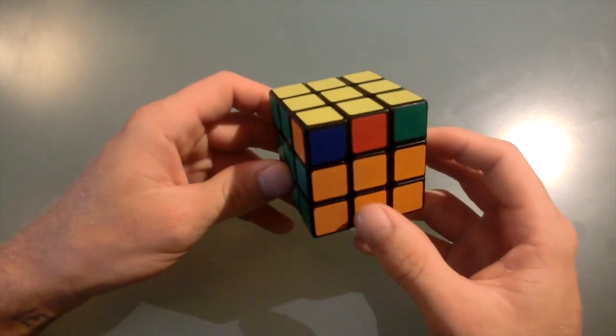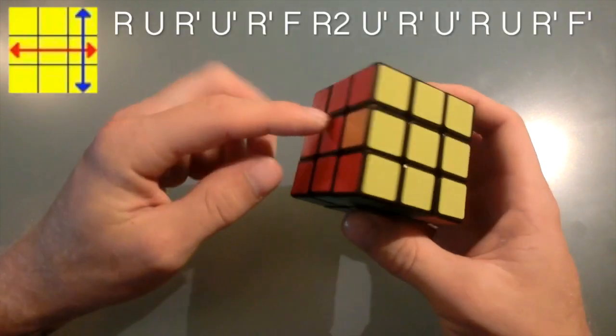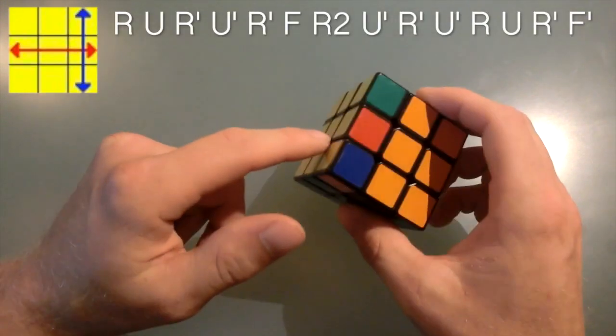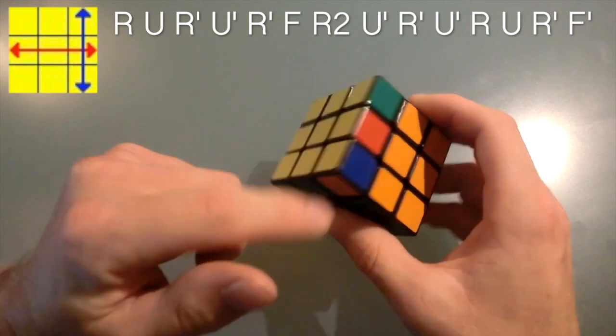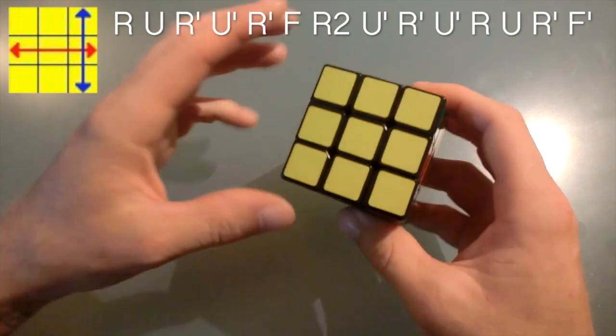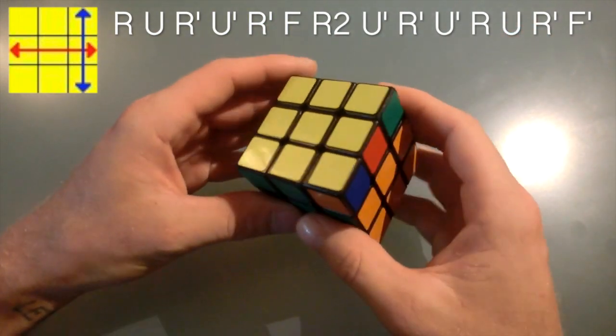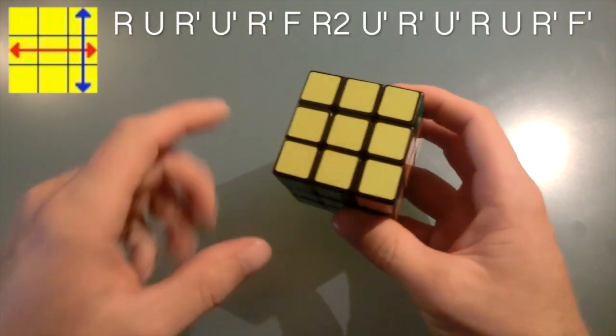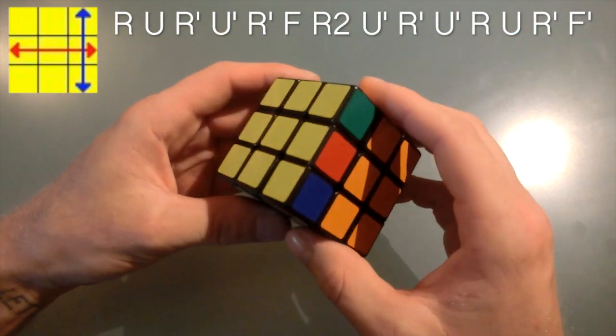Okay, the first permutation we're going to look at is called the T permutation and what it does is it moves this edge piece over to this side and it moves this corner piece over here so it kind of looks like a sideways T and I want you to hold it this way so it goes like this. This is what the algorithm looks like at regular speed.